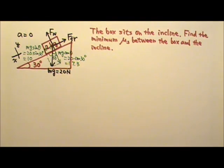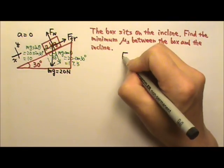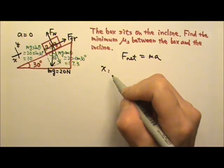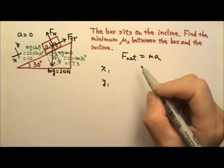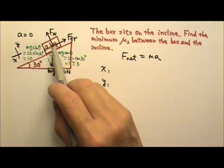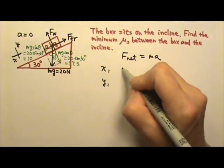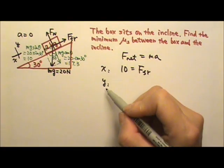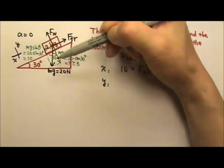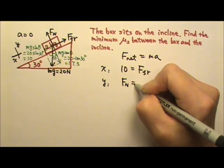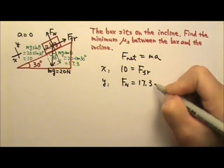So we have the components now, and we can write our force equations. Net force equals Ma. We do one direction at a time. In the x-direction, the acceleration is zero, so the force to the left and the force to the right must be equal: 10 equals friction, so friction is 10 N. In the y-direction, the acceleration is also zero, so the normal force equals 17.3 N.